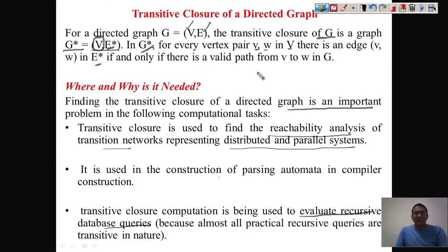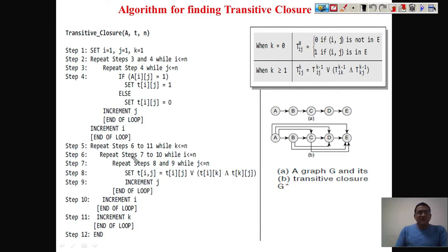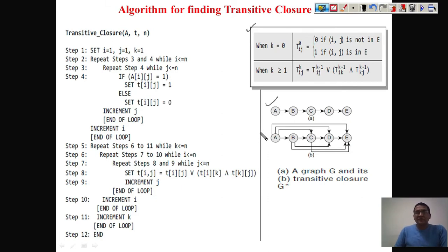Now we will see a formal algorithm for finding the transitive closure of any directed graph — an algorithm that can be implemented as a program. A simple graph is given with vertices a, b, c, d, e and edges shown. To make the transitive closure, we need to find all possible paths to every other vertex. For example, there is a path from a to b, and the path from a to c is also possible via b, so a→b→c.